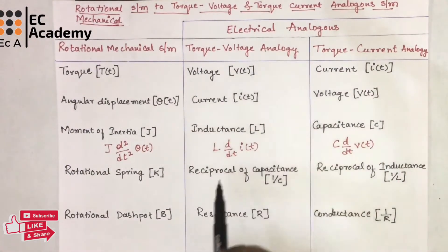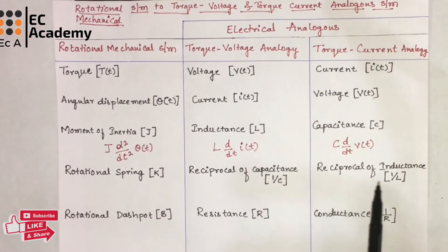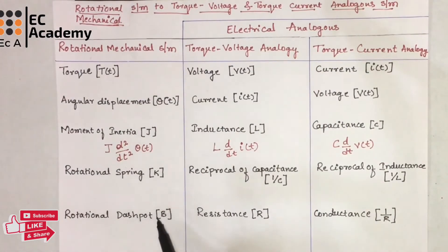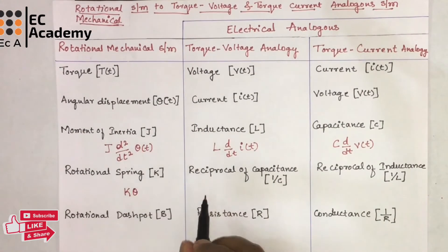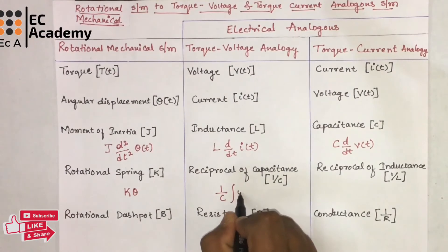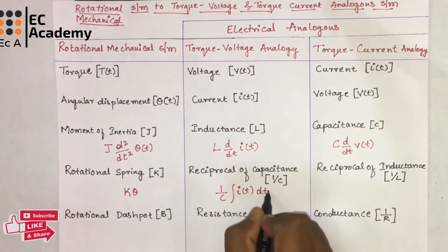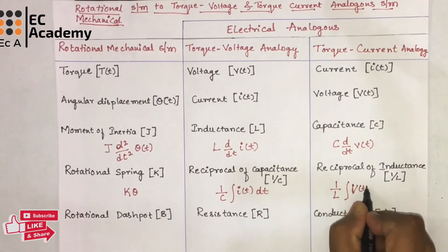In torque voltage analogy, reciprocal of capacitor is analogous to the rotational spring. And in torque current analogy, reciprocal of inductance is analogous to the spring K. The differential equation for rotational spring is Kθ. In torque voltage analogy, we can write that as 1/C times the integration of I(t) dt. And in torque current analogy, we can write it as 1/L times the integration of V(t) dt.